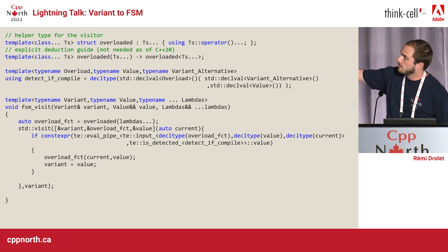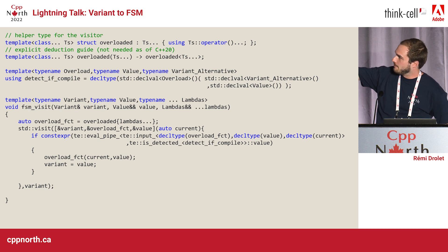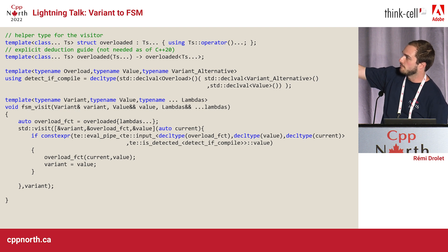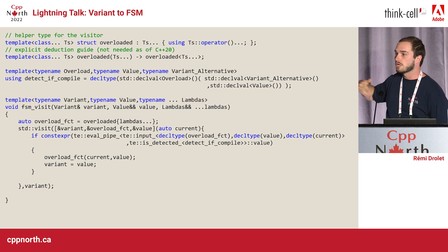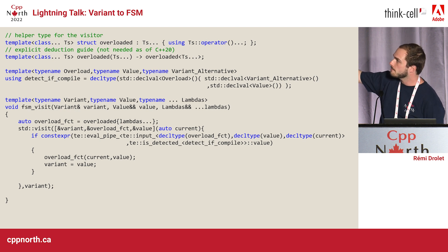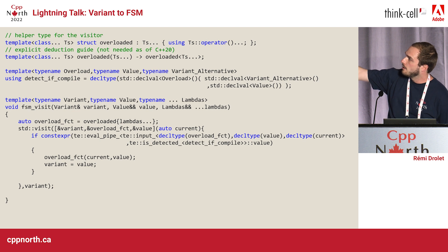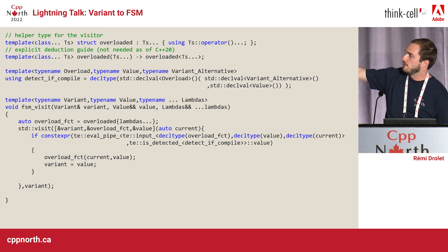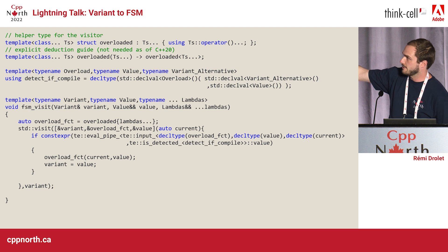Now, the function takes the variant, the value, and a bunch of lambdas. I'm going to call it ffsmvisit — for Finite State Machine Visit.